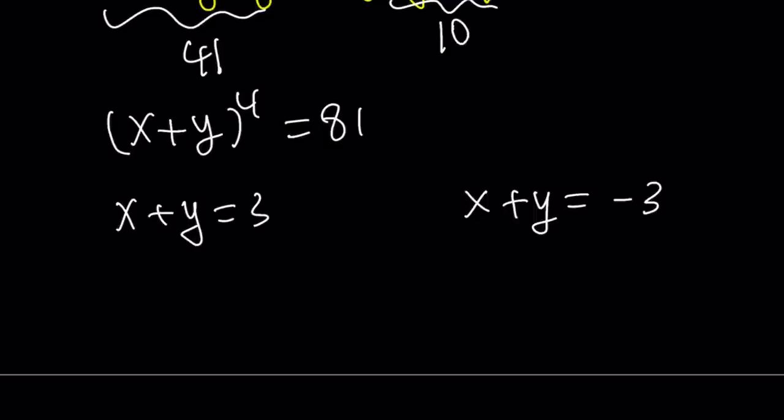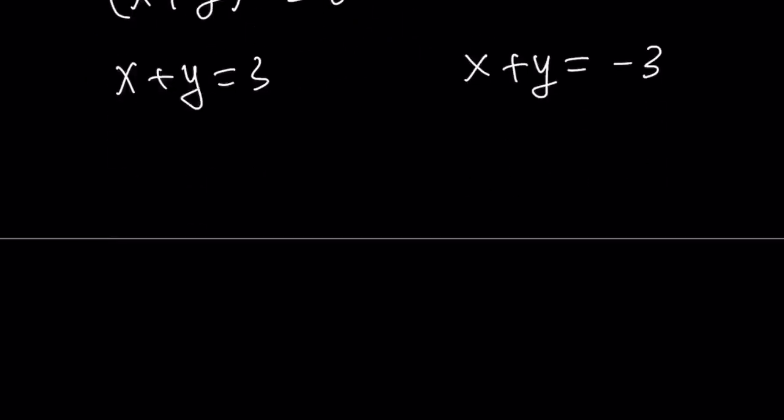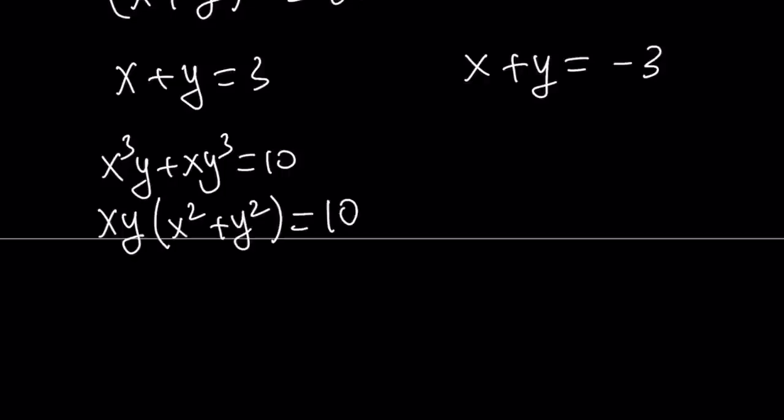Now, how can I proceed with the solution? Well, I do know that x³y + xy³, so this part here, this stuff, is equal to 10. So I can go ahead and use it. I can factor out an xy here and write this as xy(x² + y²) = 10. Great.